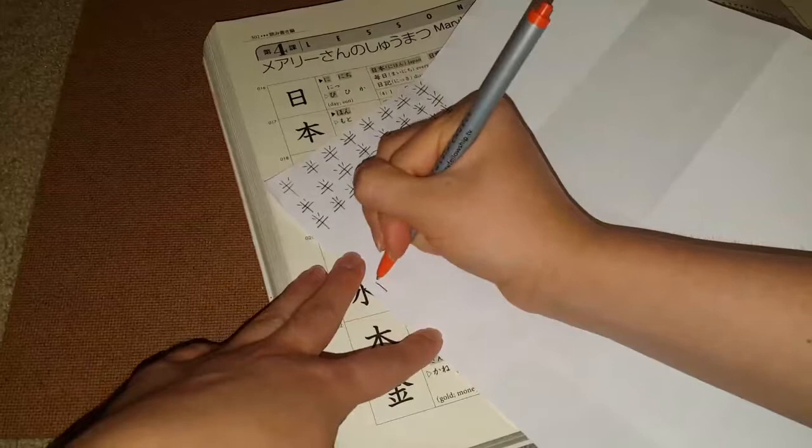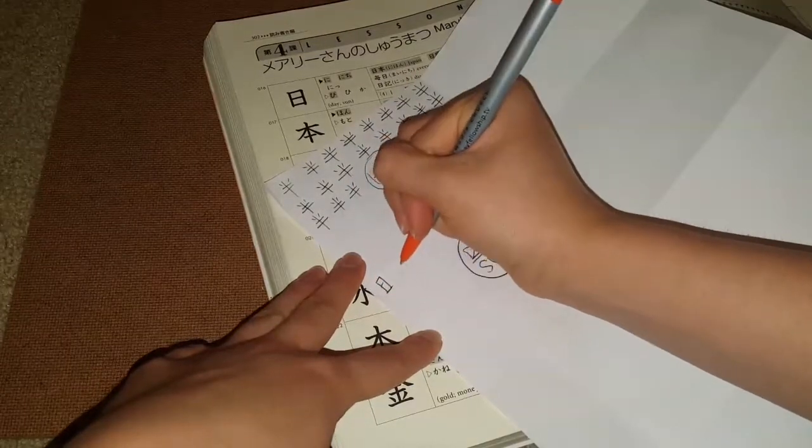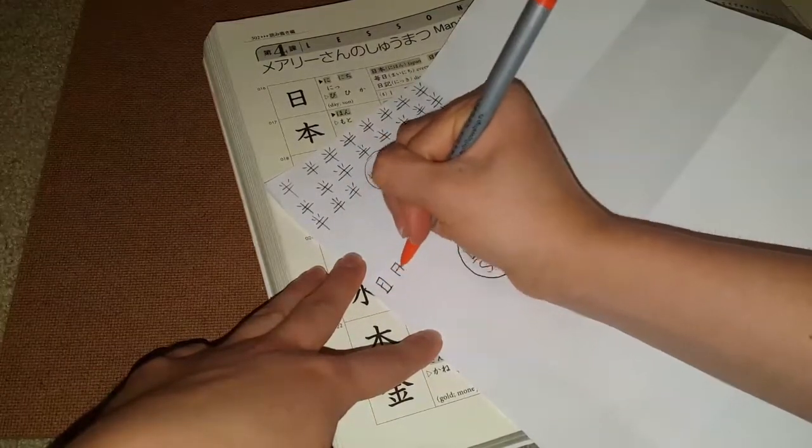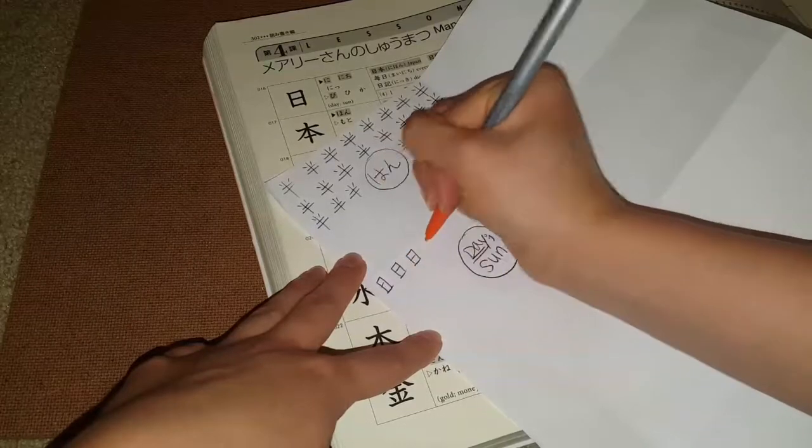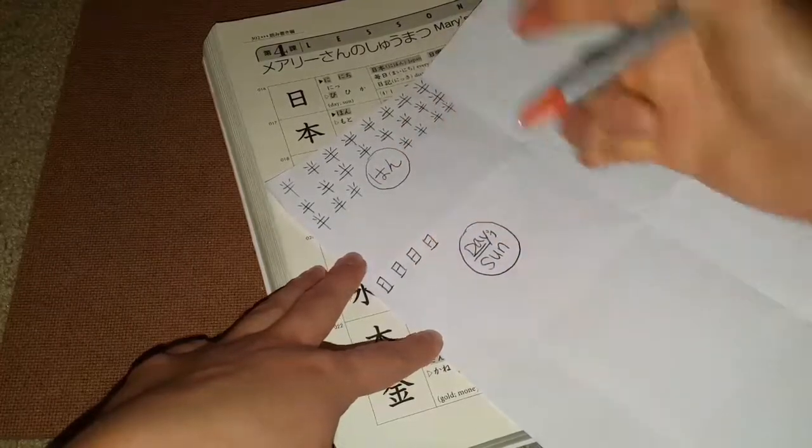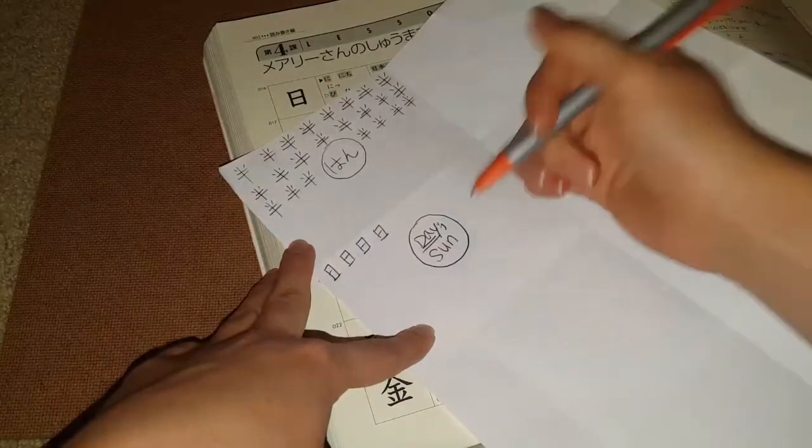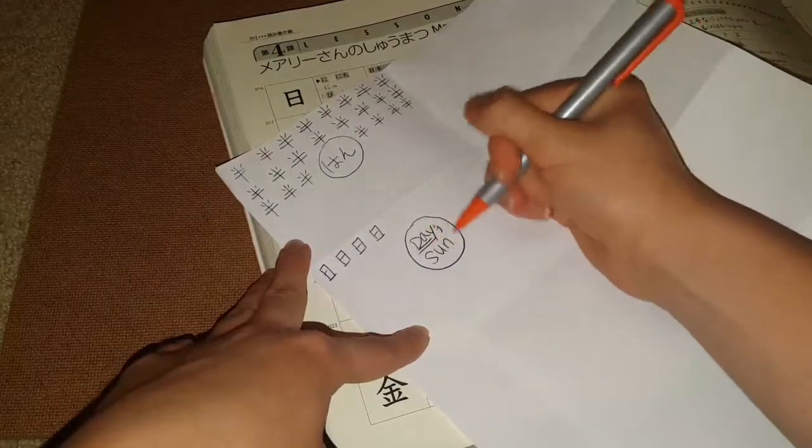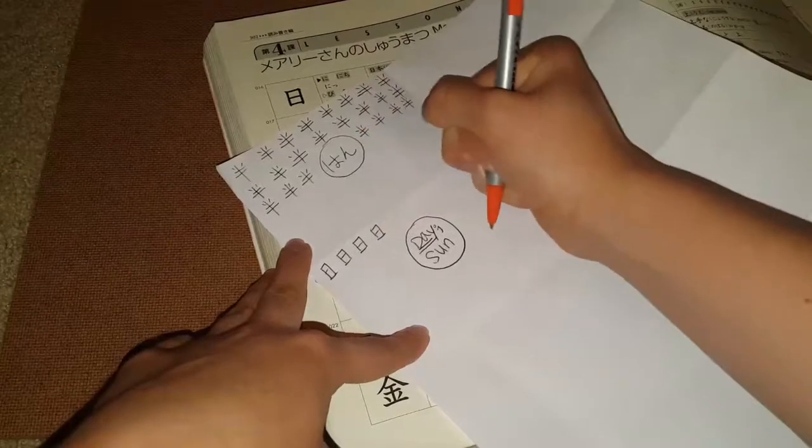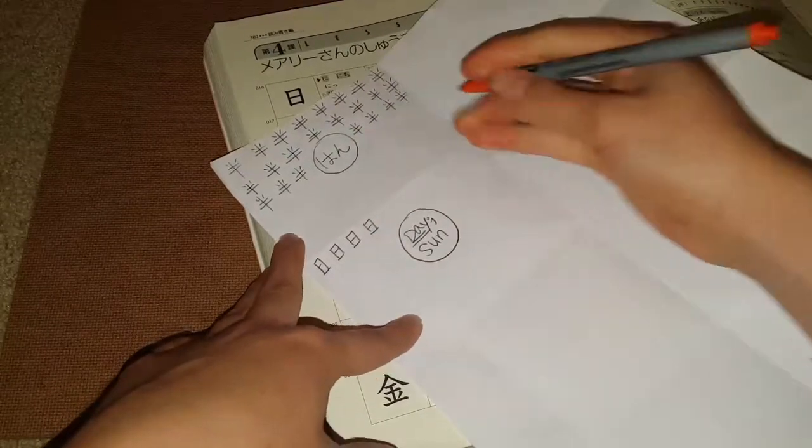So I could say, nichi, nichi, nichi, nichi, nichi. Like I could do it that way. And you can put the meaning in here. So if you were having trouble remembering, what does this mean? You could do it that way.